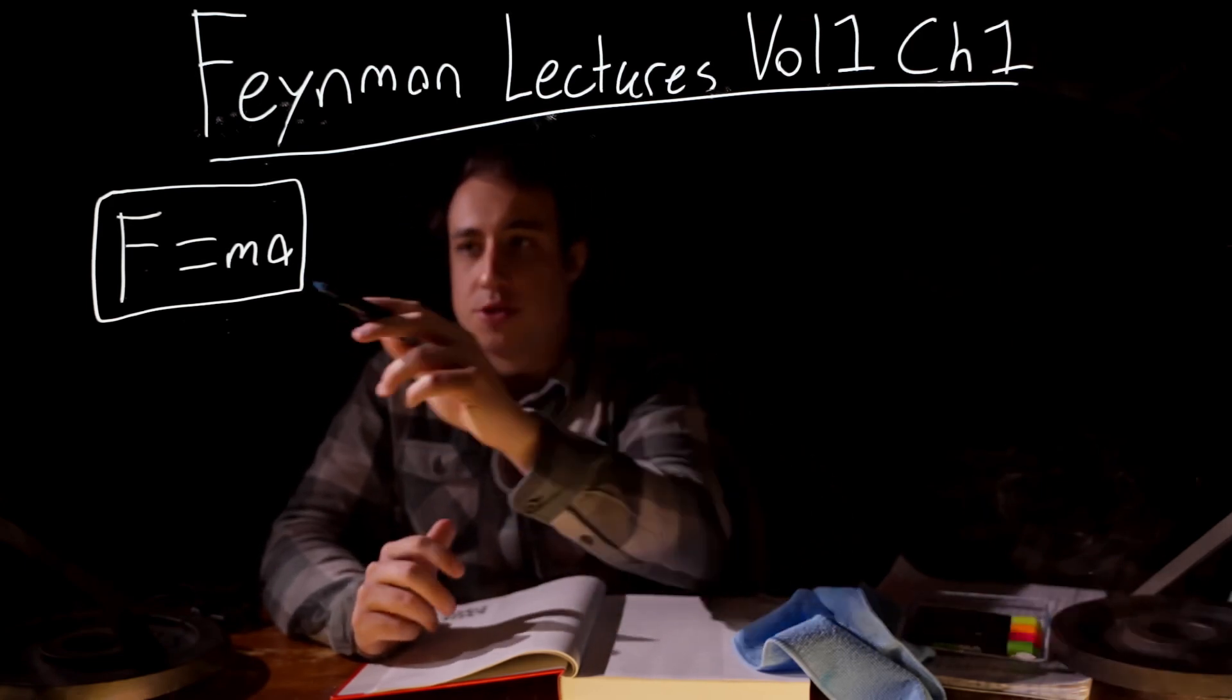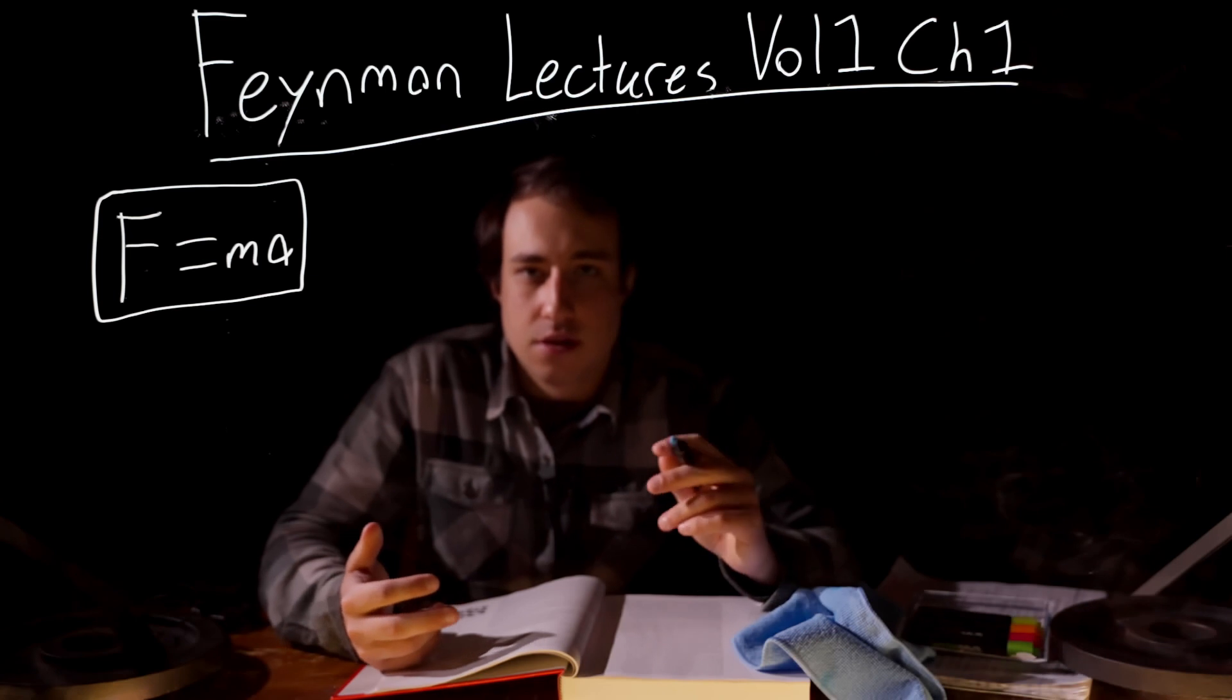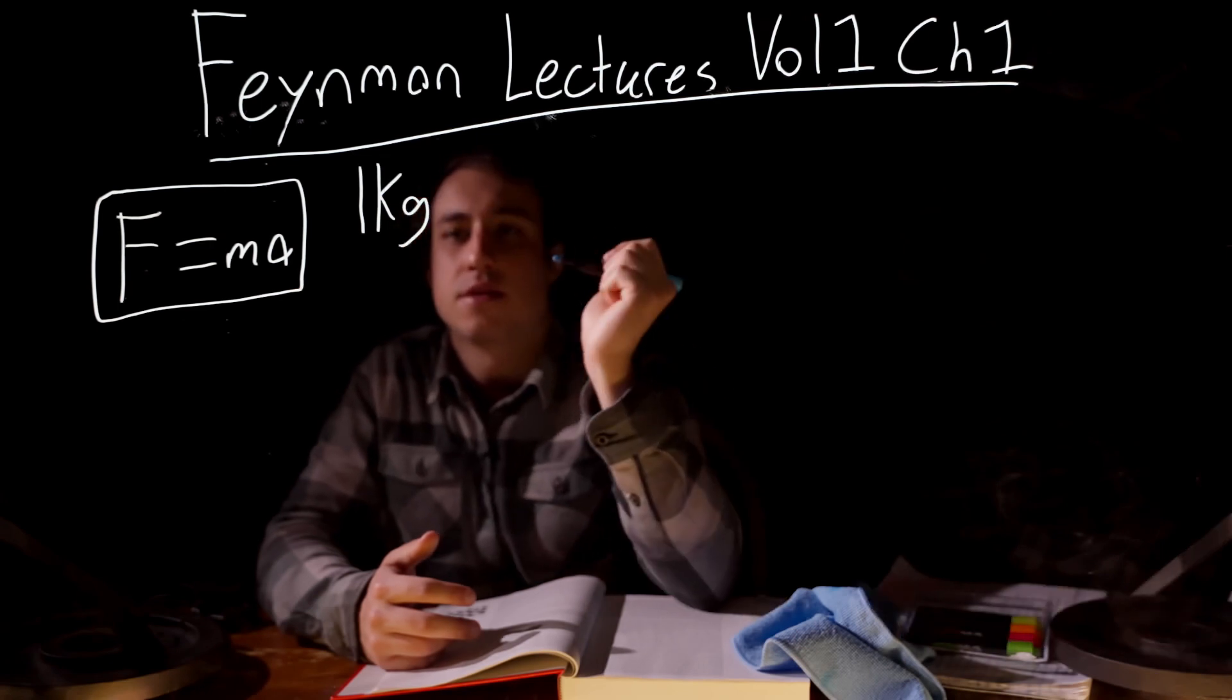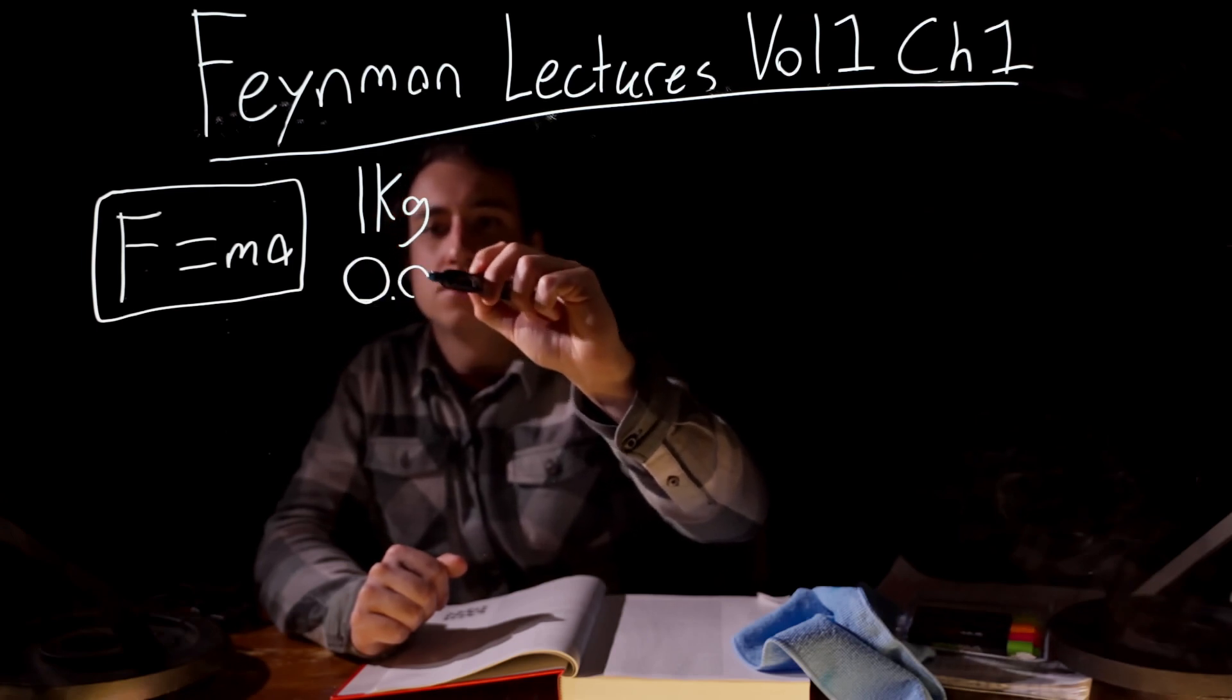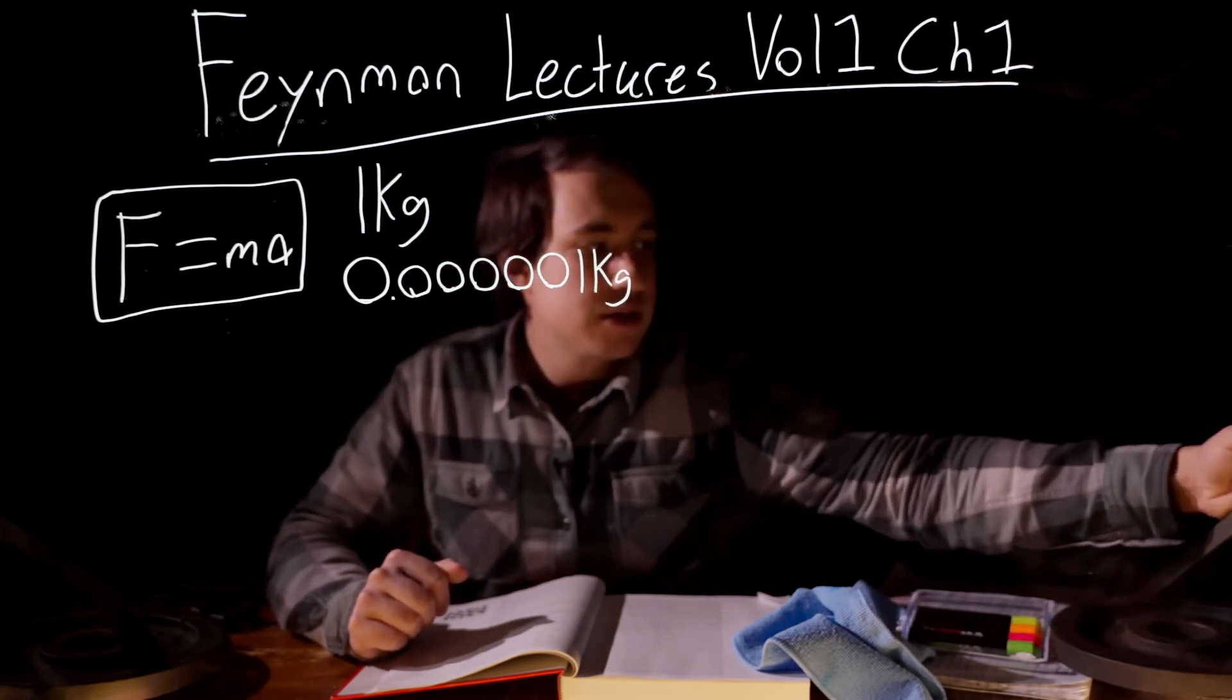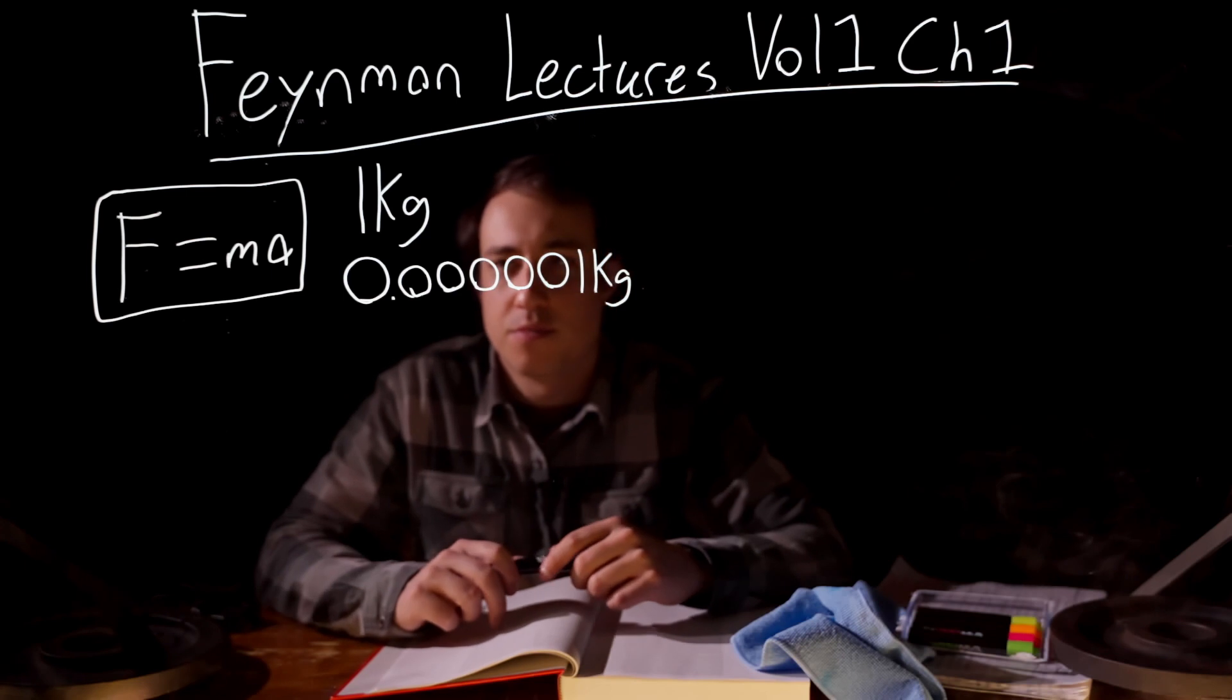This equation, or this assumption that mass is constant, really doesn't matter unless objects are moving incredibly fast. Feynman says in the book that an object, so long as it's traveling at less than 100 miles per second, that its mass will be accurate within one part in one million.